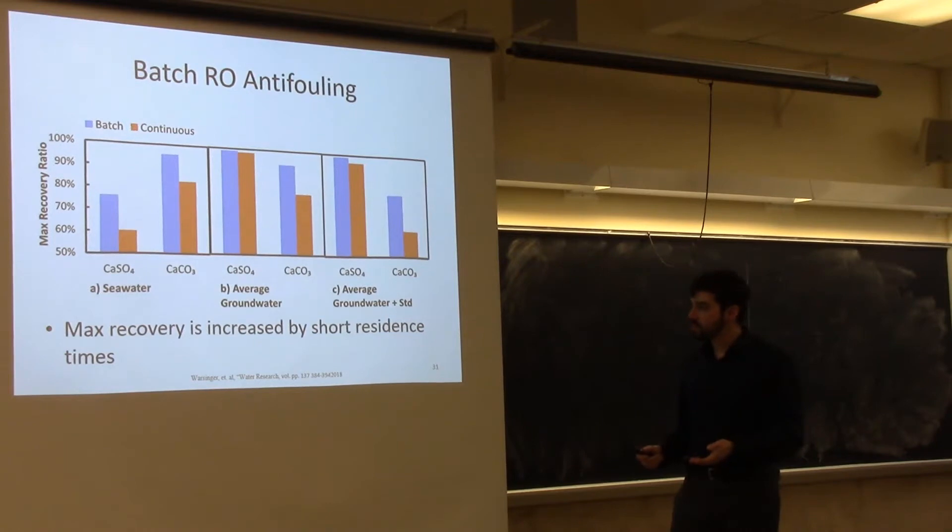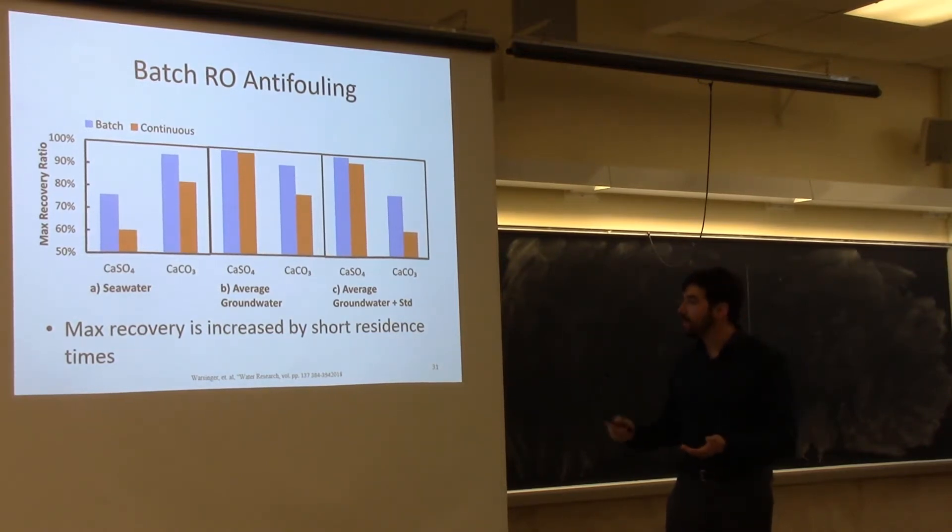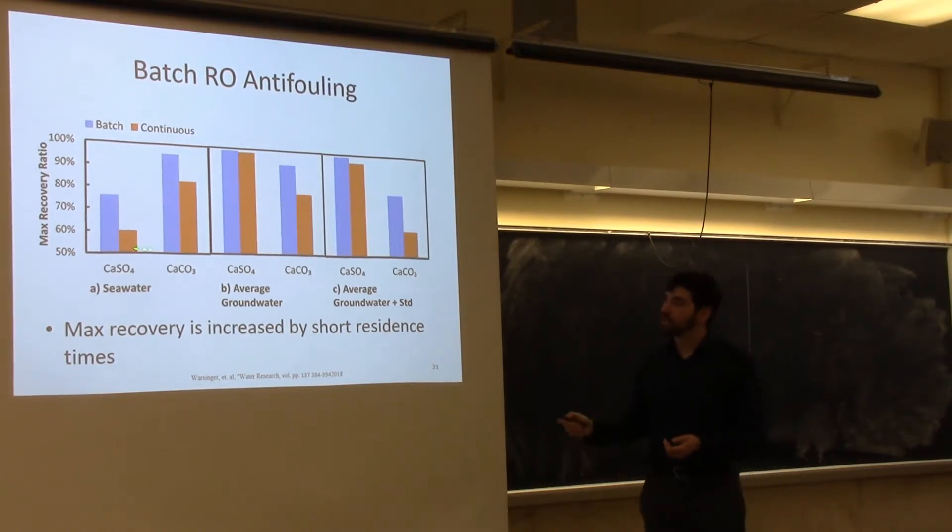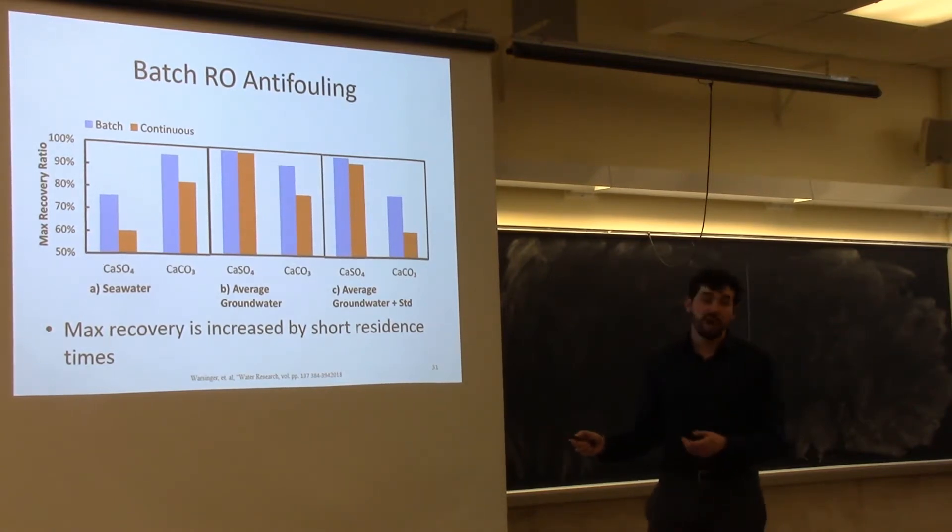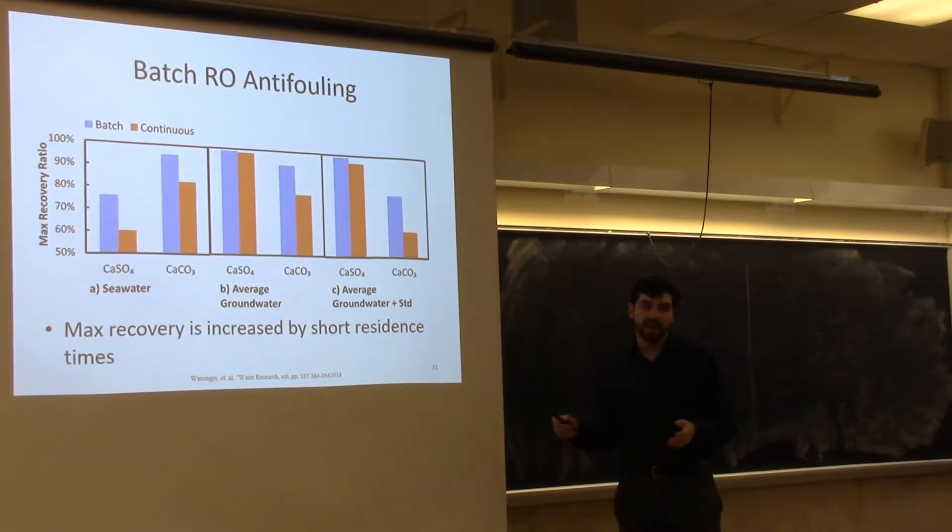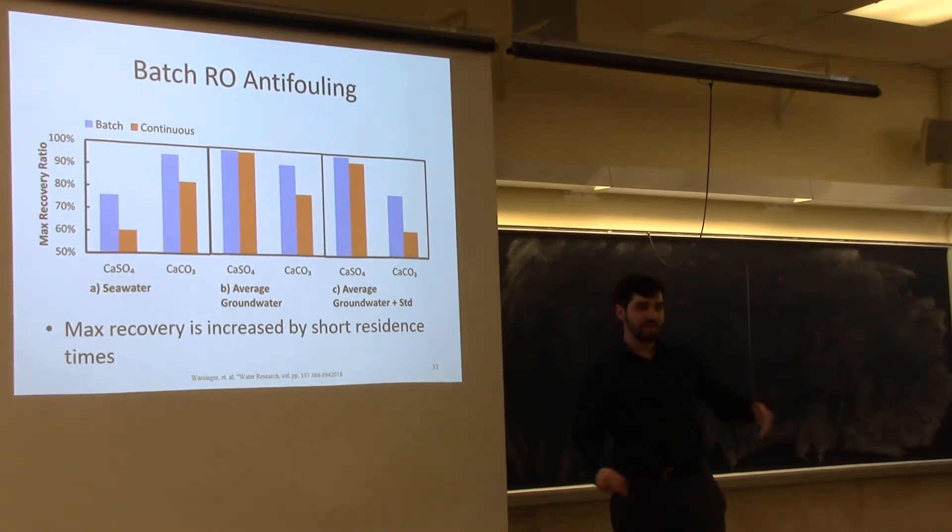Let's look at a few realistic water sources. We do a comprehensive model using this software called PHREQC, which models the saturation index of each, and then we can use those correlations to move forward. We can determine what the maximum recovery ratio could be. We see that for seawater between batch and continuous, the batch process is all in blue here. It's a much higher recovery. The lowest curve for any scenario is what's going to limit you. For seawater, continuous process really starts crystallizing at 60%, but a batch process could potentially get you to upper 70s before crystallization could occur. This could mean you could take almost half that water which you're rejecting and recover the majority of it.